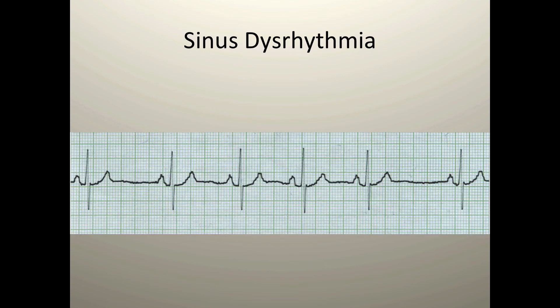Last, let's explore sinus dysrhythmia. Sinus dysrhythmia is often seen in children and is often a vagal stimulation response, which causes a change in heart rate and therefore in rhythm regularity. The only difference between sinus dysrhythmia and normal sinus rhythm is that the R-to-R intervals will vary. Everything else stays the same: P waves are upright and followed by QRS complexes. The rate typically falls between 60 and 100 because it's coming from the sinus node — it's not a slow or fast sinus problem, just a regularity change.